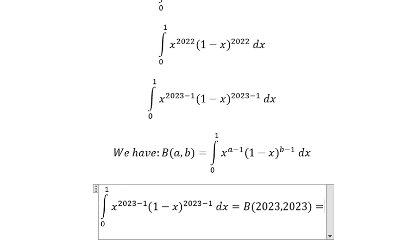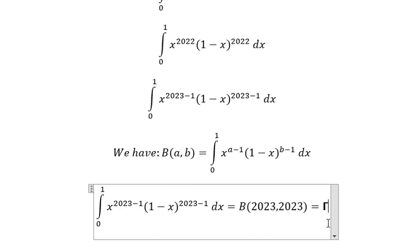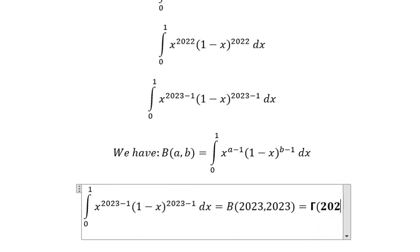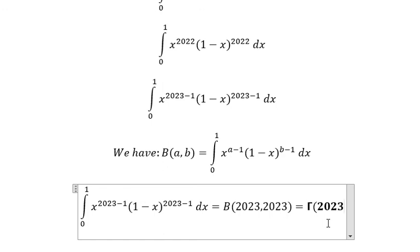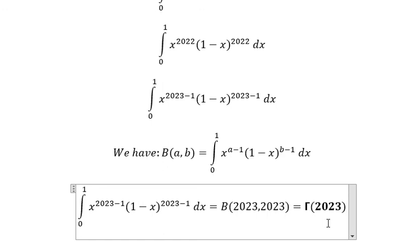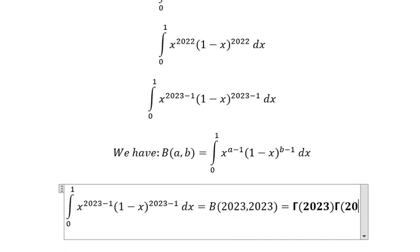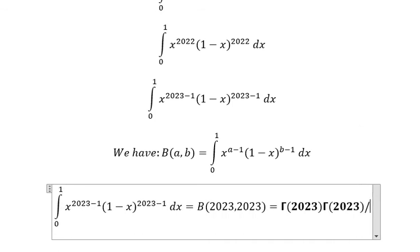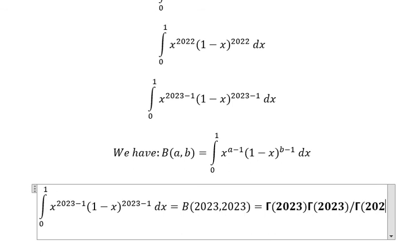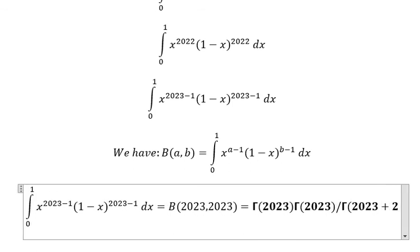2023. And we can write this as gamma of 2023 multiplied by gamma of 2023 over gamma of 2023 plus 2023.